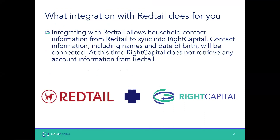Let's talk about the Redtail integration. As you can see on the slide, the contact information from Redtail will sync into Wright Capital. That includes the name and the date of birth. At this time, we don't retrieve any type of account information. If you're using something like TD or Allbridge, we encourage you to integrate both — so you've got the Redtail contact information coming in, and then if you need account information, we have other integrations for that as well. It is our goal to continue to enhance this particular integration. But at this point, what you're getting is the actual contact information, which will save time on the data entry process.